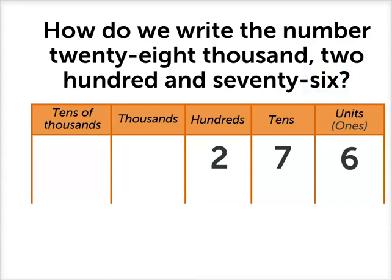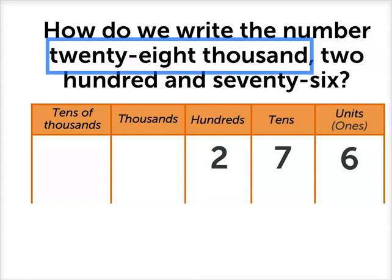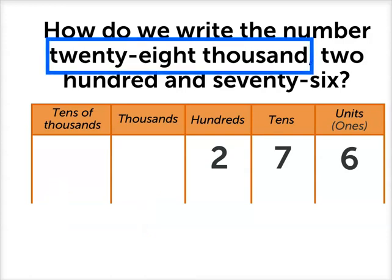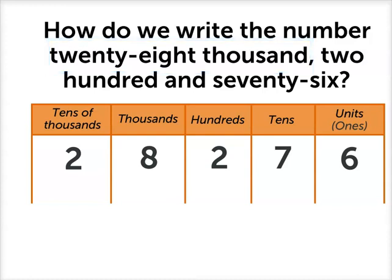But we need to write 28,000 in front of that. And that uses the tens of thousands column and the thousands column. So we need to show that there are 28,000s. That means there are two tens of thousands and eight thousands. 28.